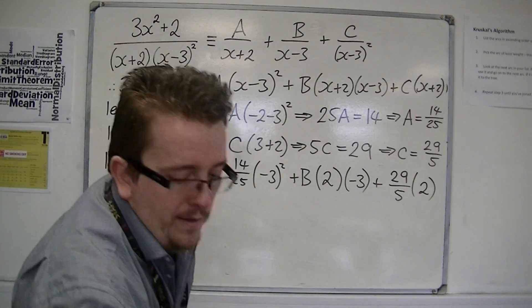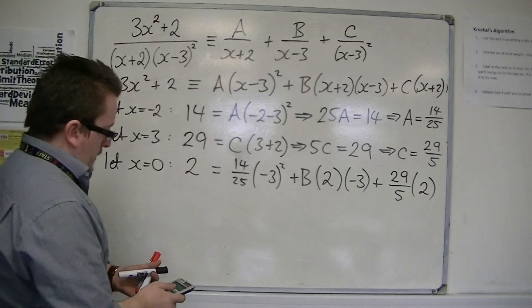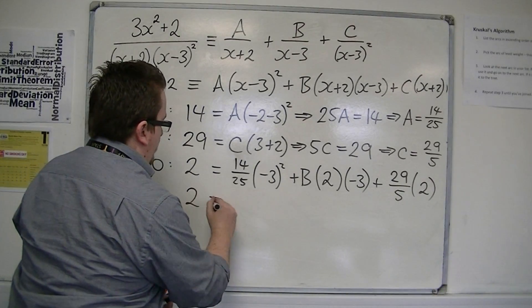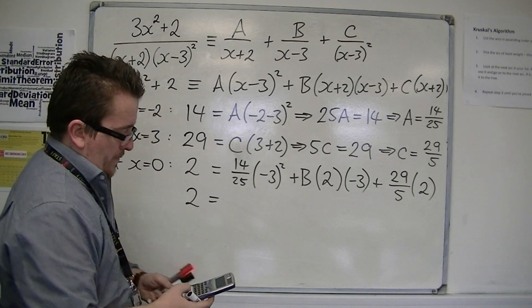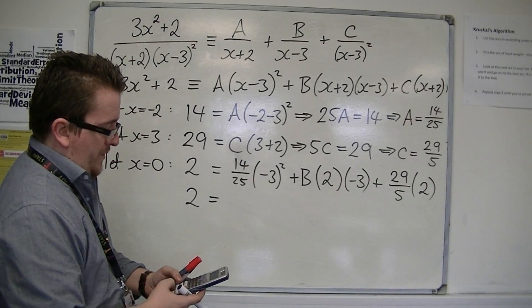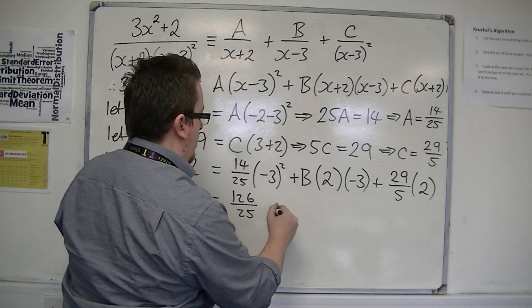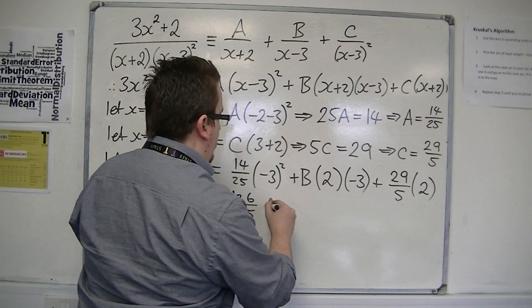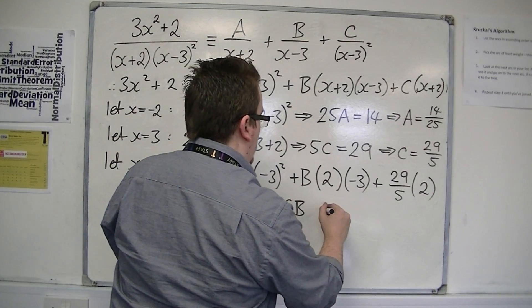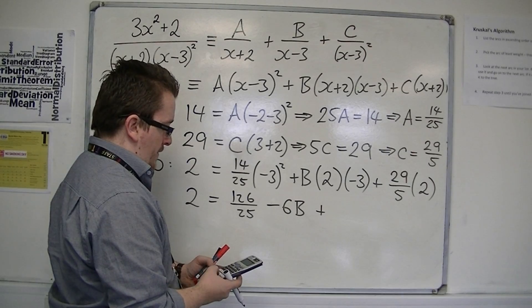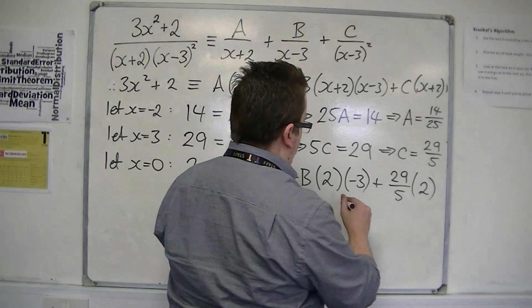This is where the calculator is going to have to come out. So, we have 2 is equal to 14 over 25 times 9, it's 126 over 25 minus 6 times B, plus 29 over 5 times 2, so 58 over 5.